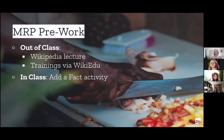We show students how to add a fact — we do a demo — and then we show them some useful library resources like our databases for encyclopedias, magazines, and newspapers. Then the rest of class they're just finding a fact to add. To get points, they must have one of us okay their fact — this is where we can check things like making sure their paraphrasing is appropriate so it's not too close to the direct quote, and looking at their citation. Those are another place folks get hung up on. And then as soon as they make their edit live, they can leave. So all of this is in preparation for MRP1.